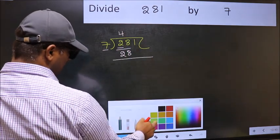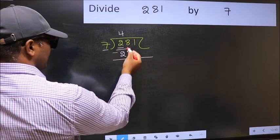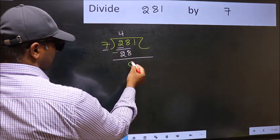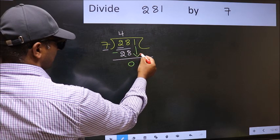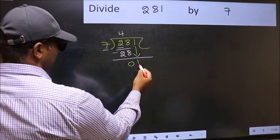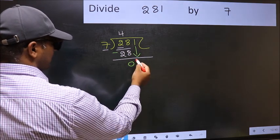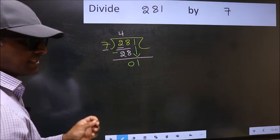Now you should subtract. 28 minus 28, 0. After this, bring down the beside number. So 1 down. After this step, the mistake happens.